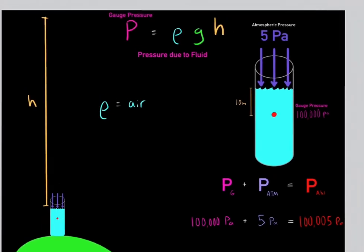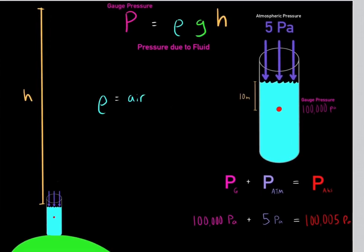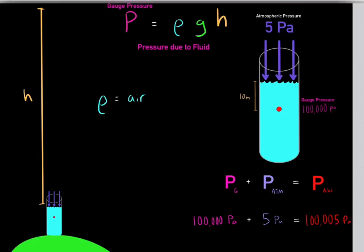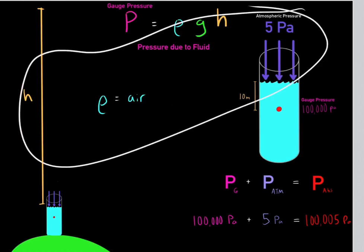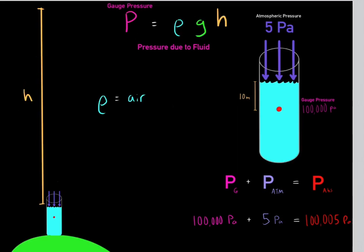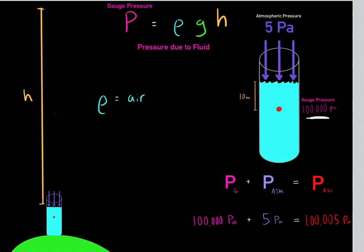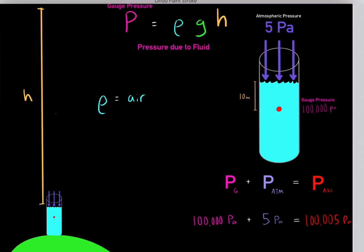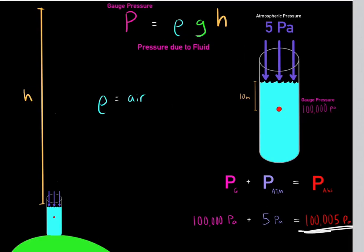There are two types of pressure to be aware of: gauge pressure, which is the pressure due to a liquid applying pressure on a given point, determined using the equation P = ρgh; and atmospheric pressure. Together these two pressures influence the absolute pressure. Adding the gauge pressure to the atmospheric pressure gives you the absolute pressure.